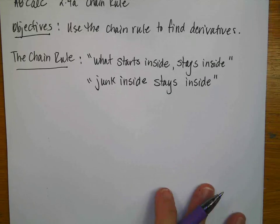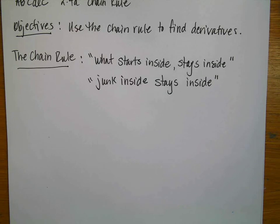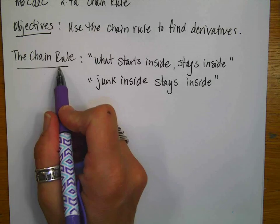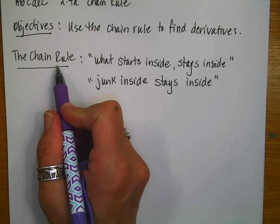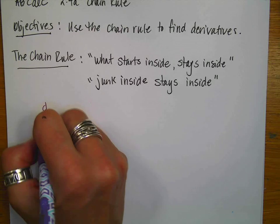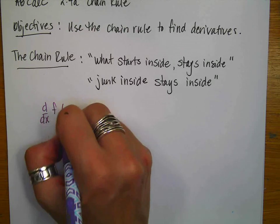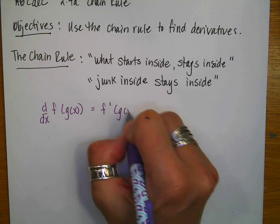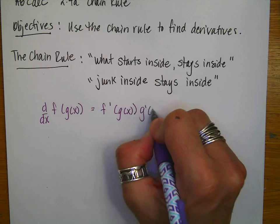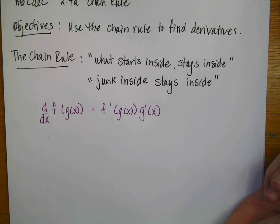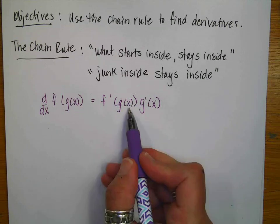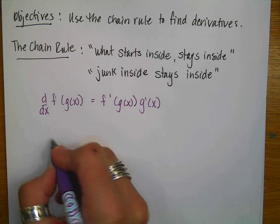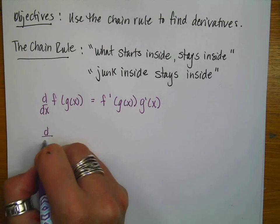I have heard this explained lots of different ways. Some people will say what starts inside stays inside, and other people have said the junk inside stays inside. Let me illustrate what that means. The chain rule is used when I have things attached to the function or I have a composition. So the derivative of f of g of x is f prime of g of x times g prime of x. This gets a little confusing, so I want to explain it a different way with some pictures.